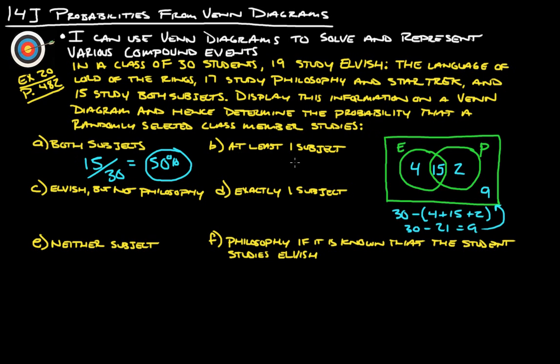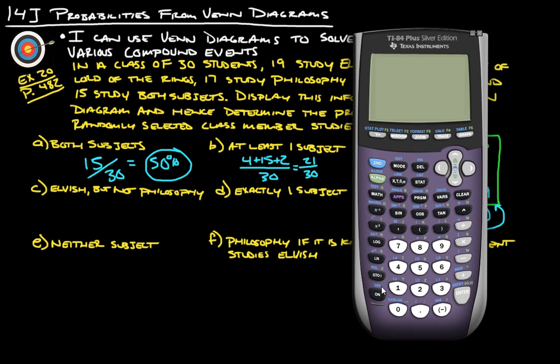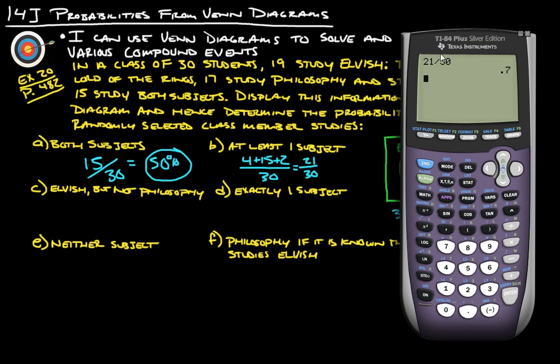How many people study at least one subject? That is going to be the four, the 15, and the two. So four plus 15 plus two all over 30, which is going to be 21 out of 30. 21 divided by 30 we can do as 70 percent.